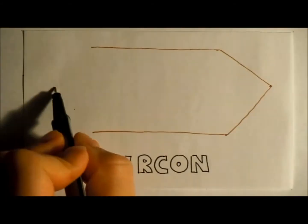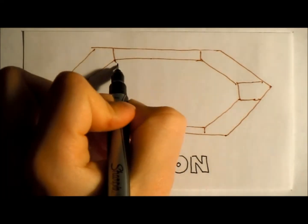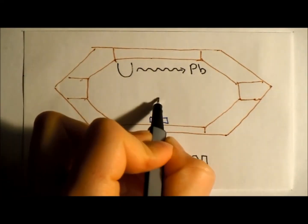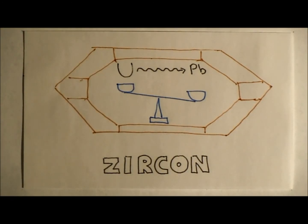Zircon is a really strong mineral that could have withstood the high temperatures and pressures of the impact. It contains uranium, a radioactive element that decays over millions of years to form lead. We can measure the amount of lead present today to determine how old the zircons are, and therefore how old the crater is.